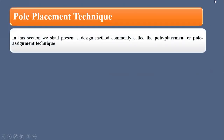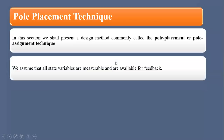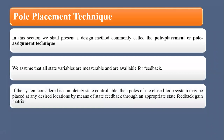In pole placement technique, our approach is that we assume all the state variables are measurable and they are available for feedback. Now, if the system we are working on is completely state controllable, the poles of the closed loop system can be placed at any desired location. The methodology used to place the poles to the desired location is based on state feedback theory, in which we obtain a state feedback gain matrix such that the purpose is fulfilled.